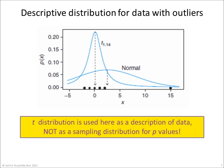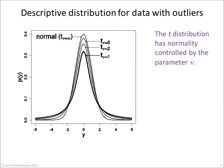Please understand that the t-distribution is used here as a description of data, not as a sampling distribution for p-values. The t-distribution has its normality controlled by the parameter nu. Nu ranges from 1 to infinity. When nu is 1, the t-distribution has heavy tails as shown by the dark curve in this figure. As nu approaches infinity, the t-distribution becomes normal.